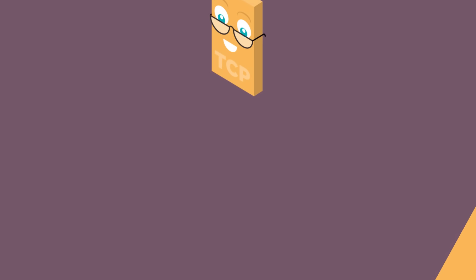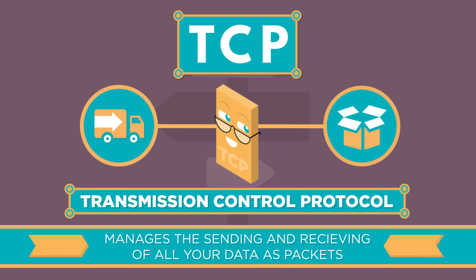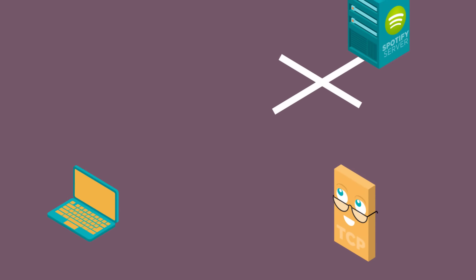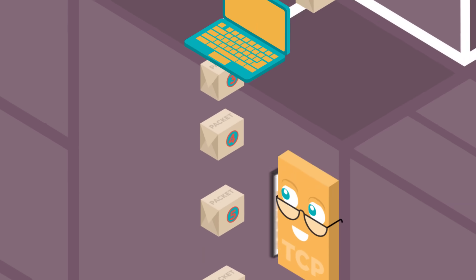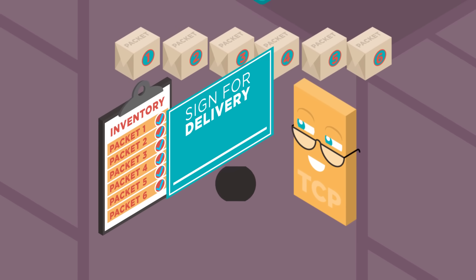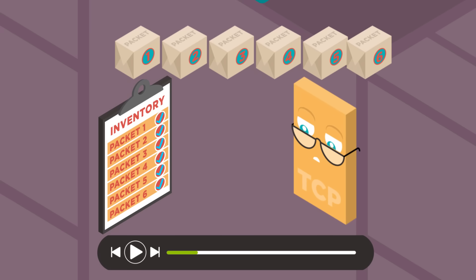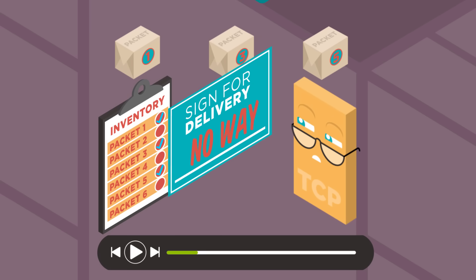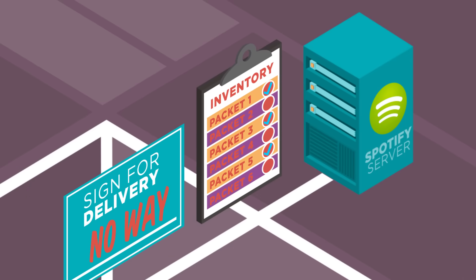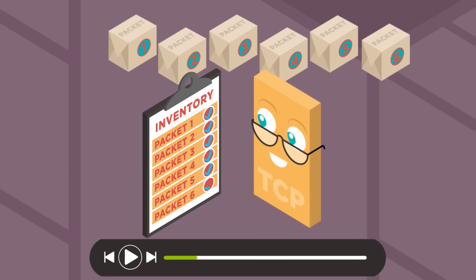What if you want to request some data and not everything is delivered? Say you want to listen to a song — how can you be 100% sure all the data will be delivered so the song plays perfectly? Introducing TCP, Transmission Control Protocol. TCP manages the sending and receiving of all your data as packets. Think of it like a guaranteed mail service. When you request a song on your device, Spotify sends the song broken up into many packets. When your packets arrive, TCP does a full inventory and sends back acknowledgements of each packet received. If all packets are there, TCP signs for your delivery and you're done. If TCP finds some packets are missing, it won't sign — otherwise your song wouldn't sound as good or portions could be missing. For each missing or incomplete packet, Spotify will resend them. Once TCP verifies the delivery of all packets for that one song request, your song will start to play.